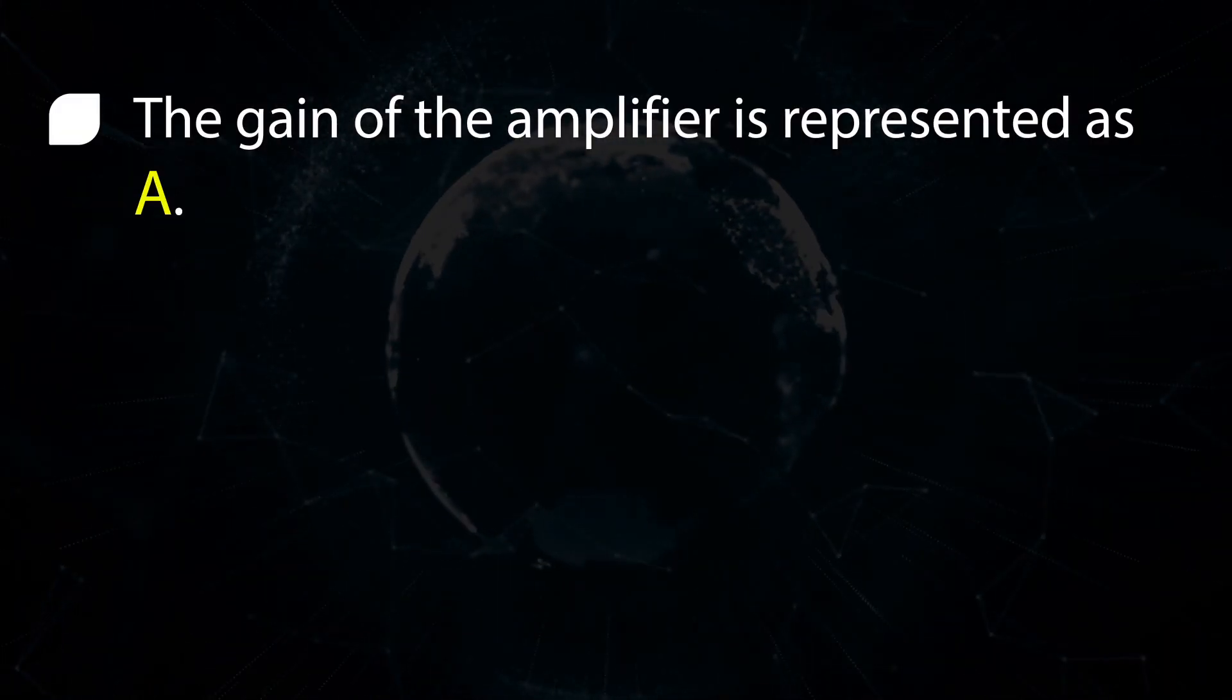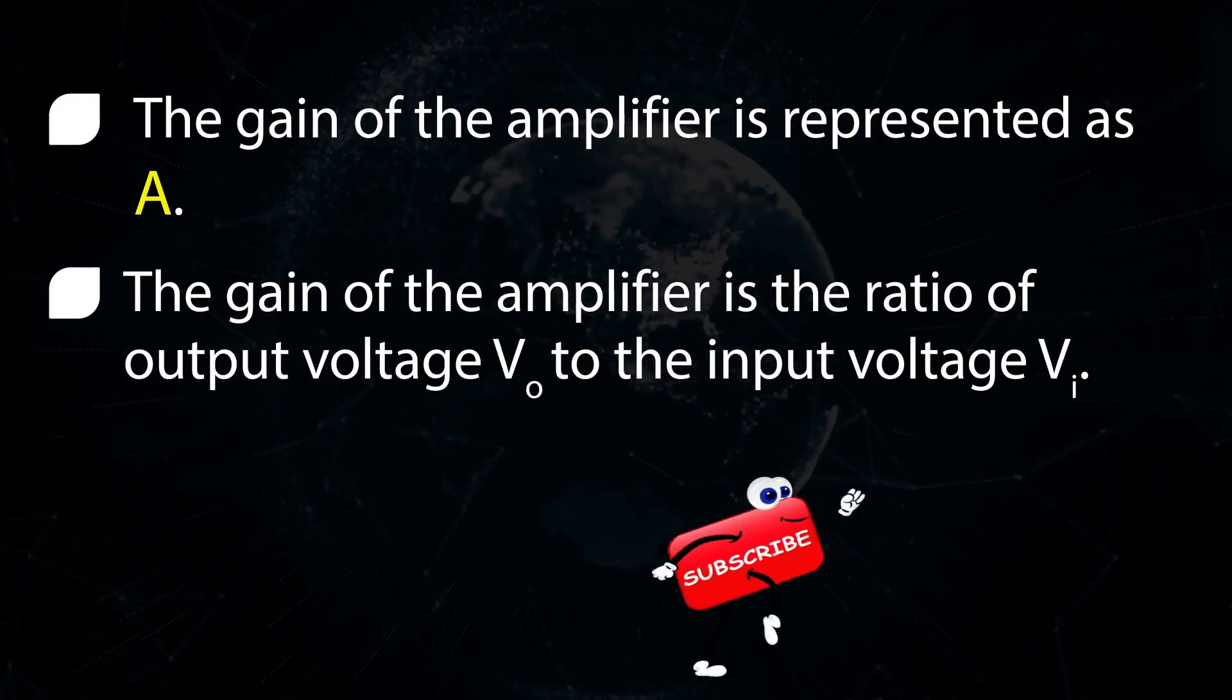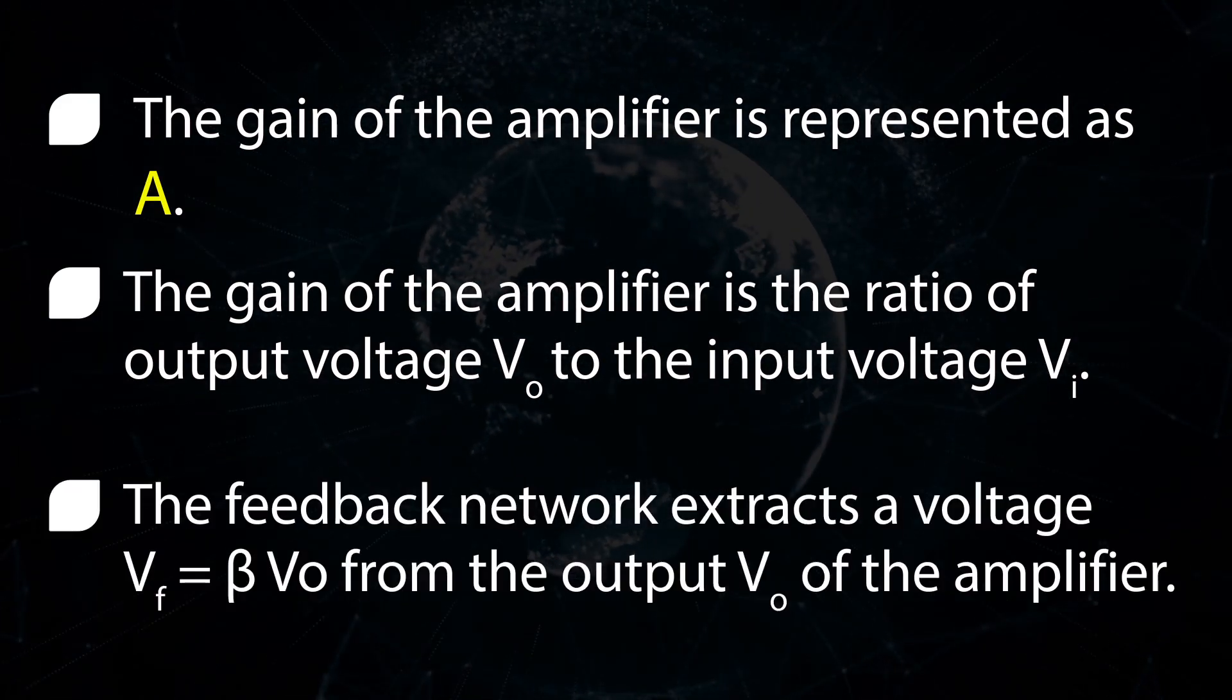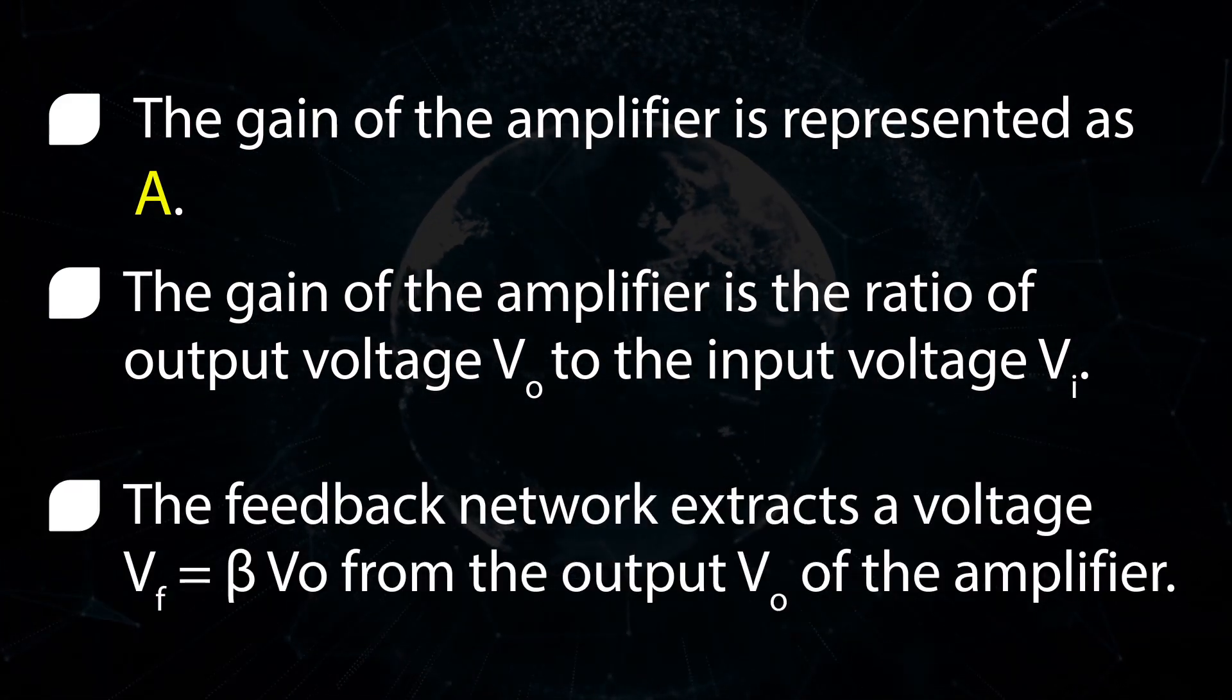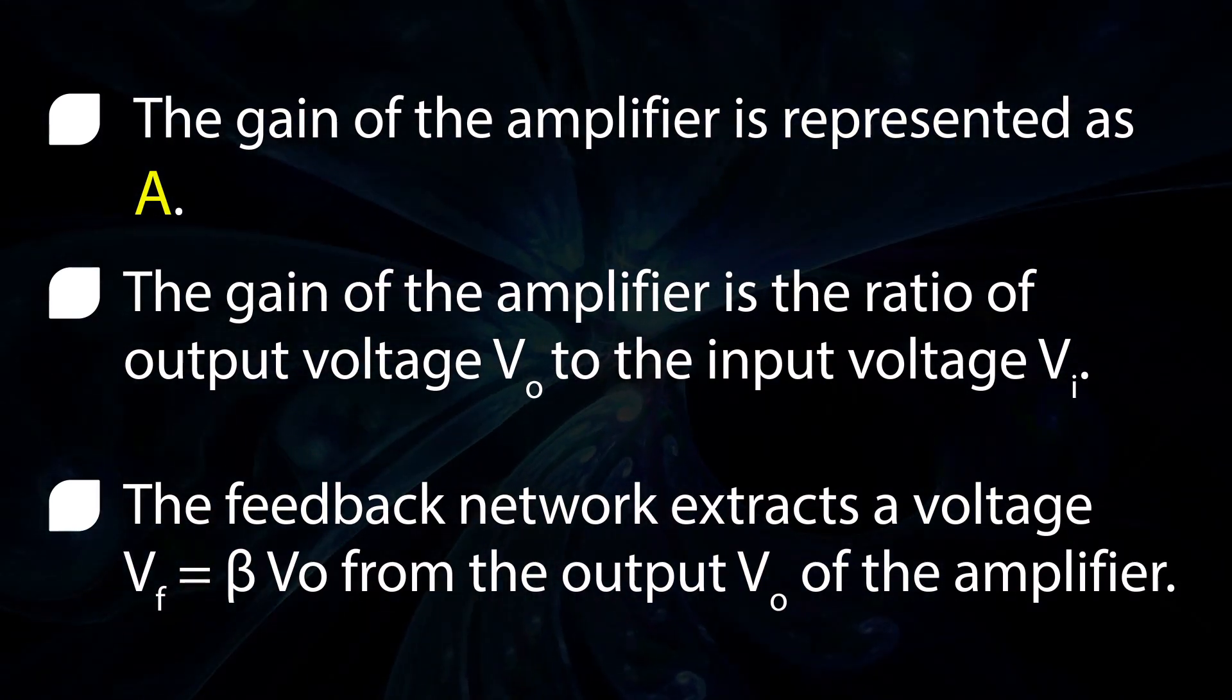The gain of the amplifier is represented as A. The gain of the amplifier is the ratio of output voltage Vo to the input voltage Vi. The feedback network extracts a voltage Vf equal to beta Vo from the output Vo of the amplifier.